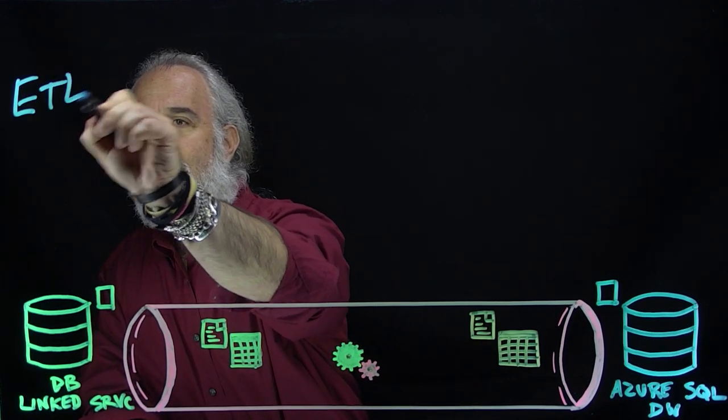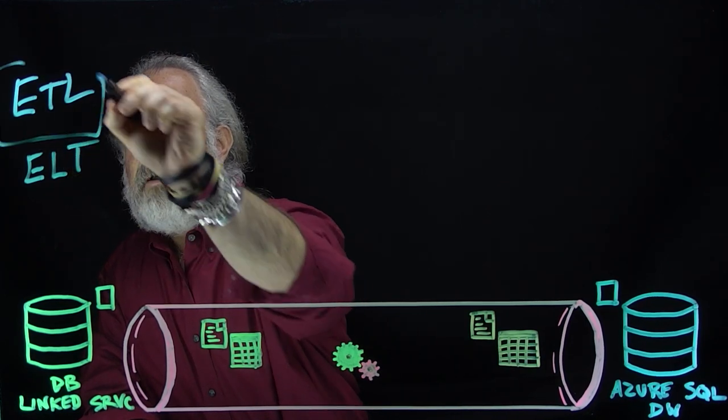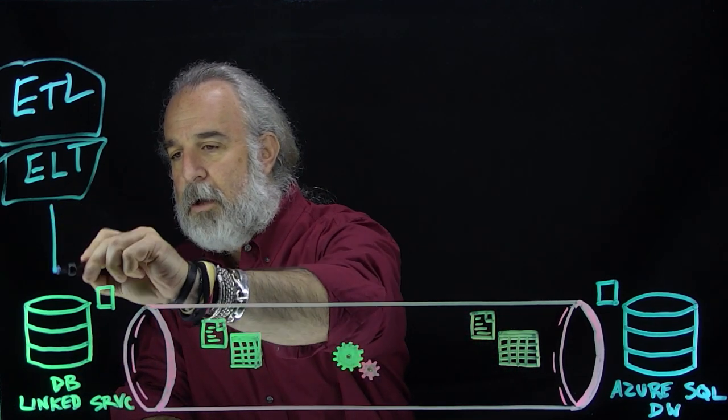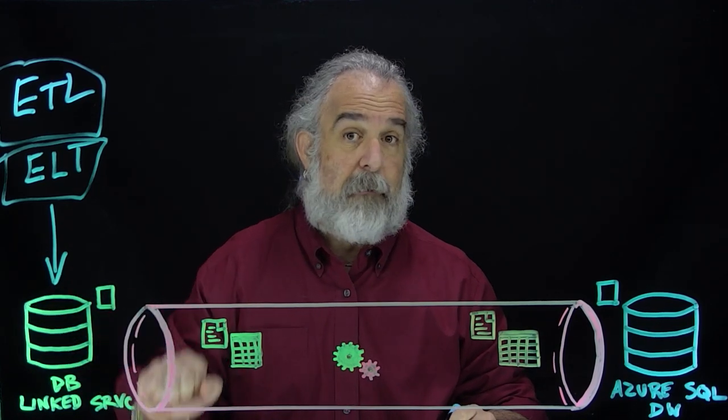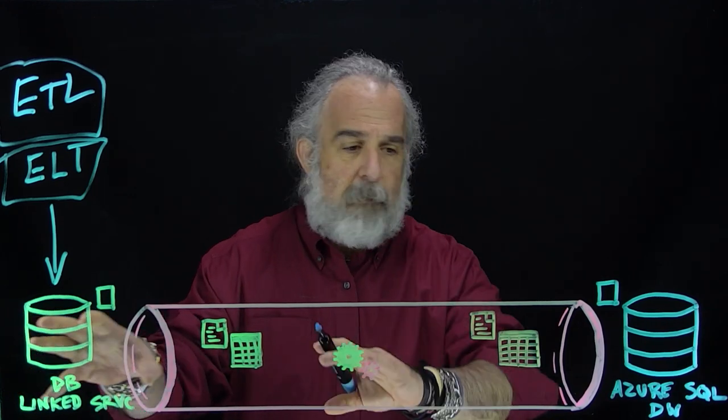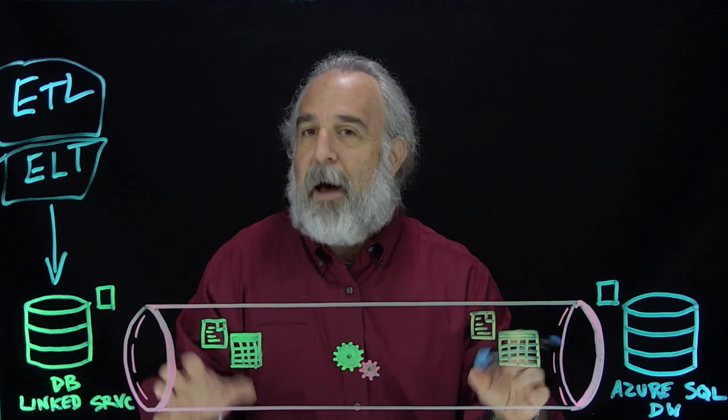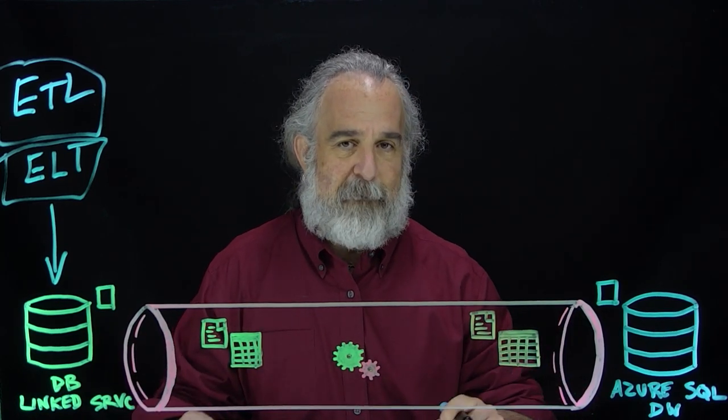Specifically, in the language of data and data management, it lets us do one of two things. We can either do what's called ETL — Extract, Transform, and Load — or we could do a derivative of that, what's called ELT — Extract, Load, and Transform. These are activities we're going to engage in targeted at our data. We're going to take the data sitting in this database, in whatever format it is, and allow it to be moved through what you see in the middle here: this pipeline. This pipeline represents one of the key important elements of what the Data Factory does for us.